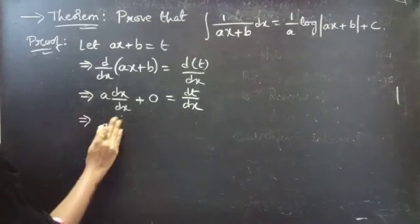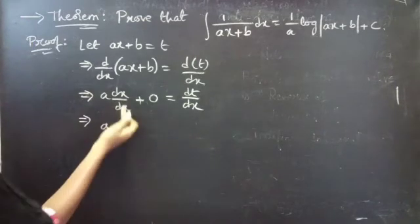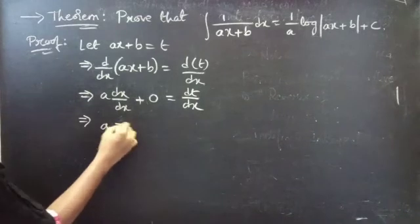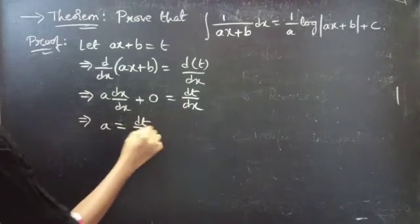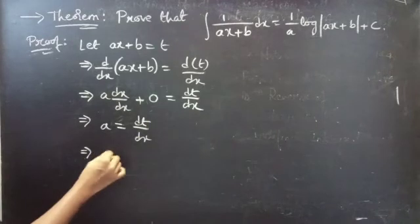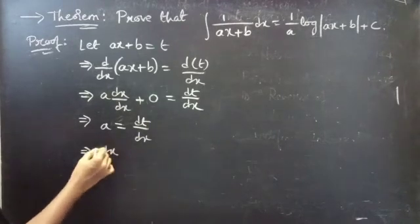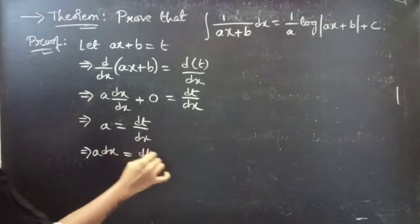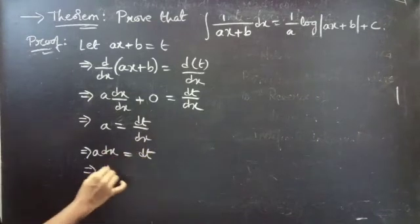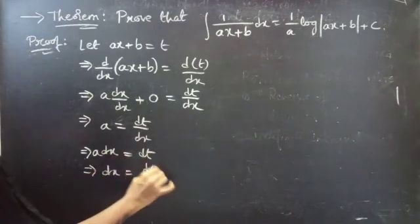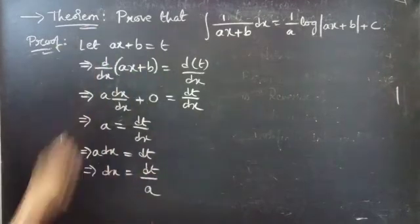So you could write it as a into dx by dx is 1, so a equals to dt by dx. Again you could write it as a into dx equals to dt. From this you will get dx equals to dt by a.